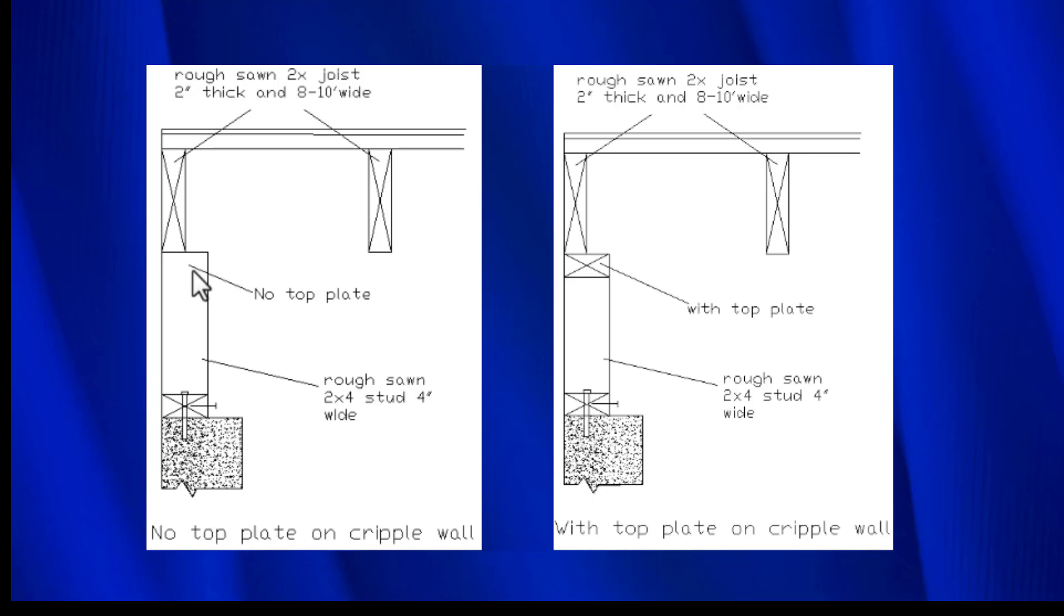We need to make a connection to the floor that we're trying to restrain from movement, so we need to change the framing to make that connection. Over here it's simple because you have this top plate. You can make a connection between the end joist and the top plate with an L90 or some type of hardware to complete the connection.